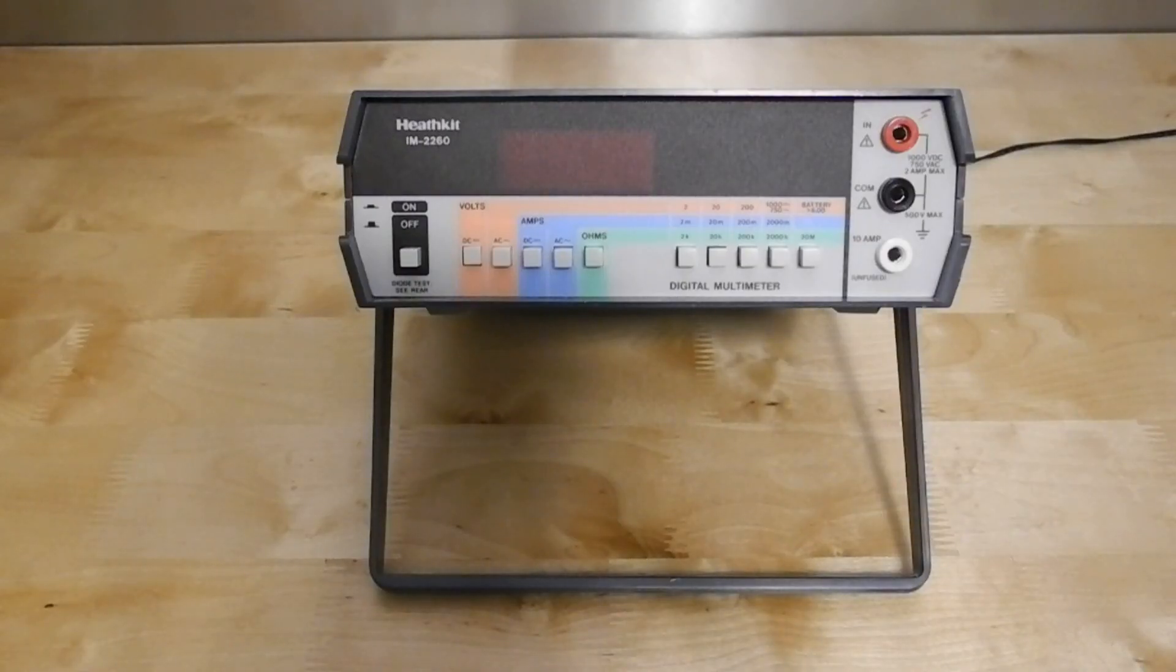The IM2260 is a 3.5-digit digital multimeter. It can measure AC or DC voltage and current, as well as resistance. It was only offered as a kit and could be assembled and calibrated without any additional test equipment.